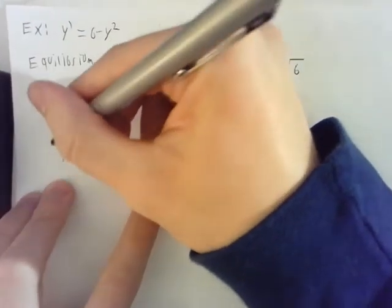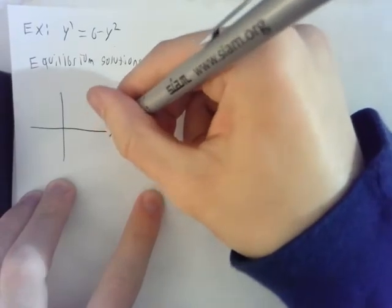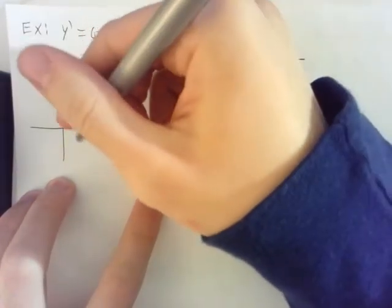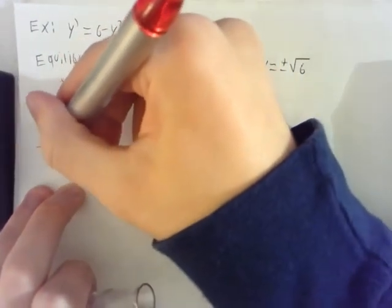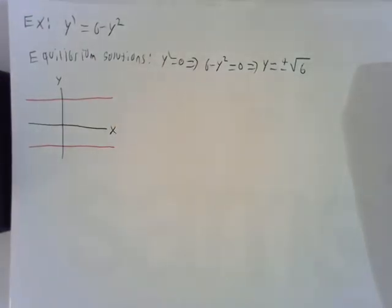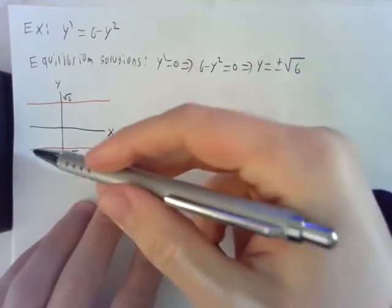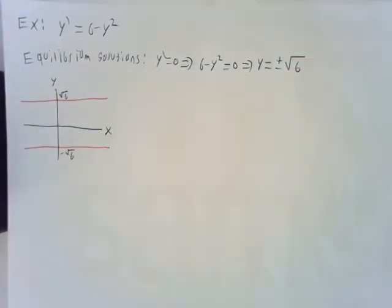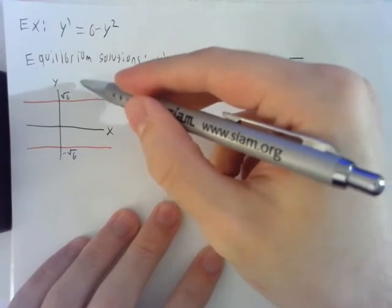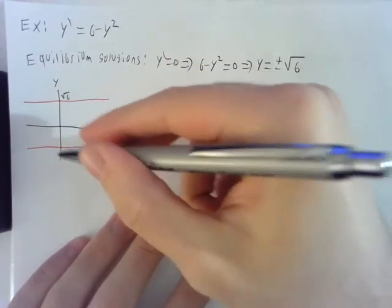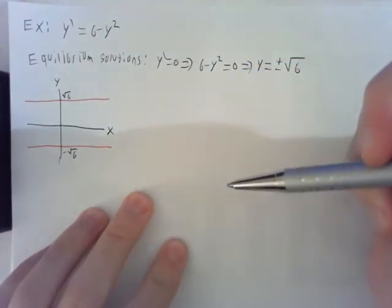So now if we sketch the xy plane here, we're going to see that we have these solutions at plus or minus square root of 6. And if we start on one of these red lines, then the solution will just stay there forever. Okay, so now we have three regions. We have the region up here above square root of 6, the region between negative square root of 6 and square root of 6, and then the region below negative square root of 6. So let's try to determine whether the solutions are increasing or decreasing in each of these regions.